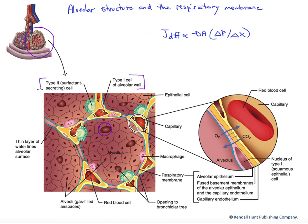Type 2 cells are fewer in number, but very important. These are the surfactant-producing cells. This is the chemical that reduces the surface tension of the water lining the alveolar wall.